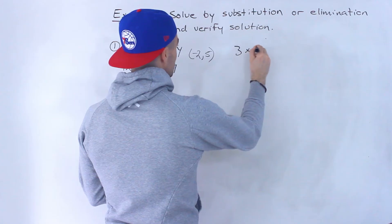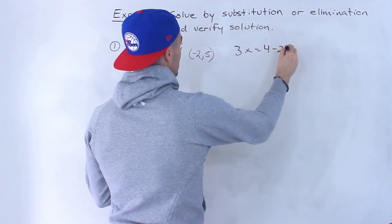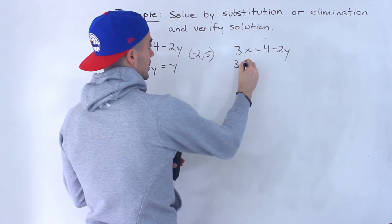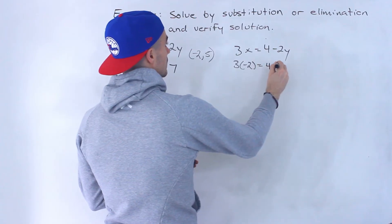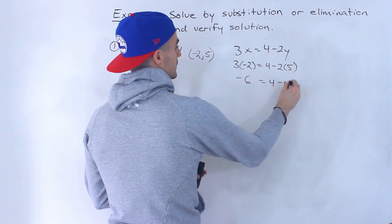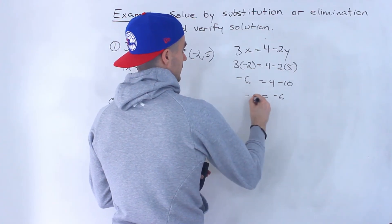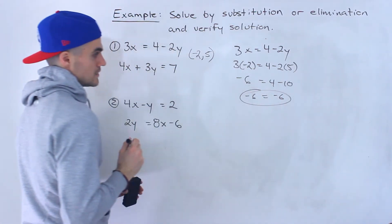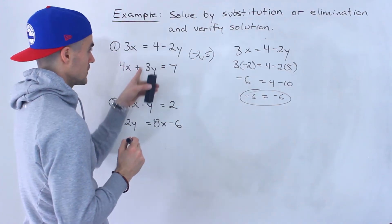We'll have 3x equals 4 minus 2y. So if I plug in negative 2 here and 5 over here, negative 6, 4 minus 10, negative 6 equals negative 6. So left side equals right side indeed for this one.